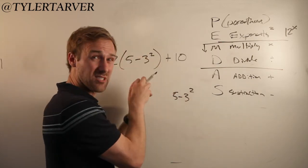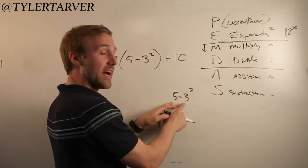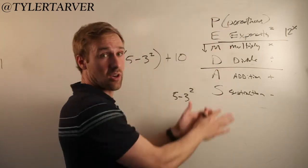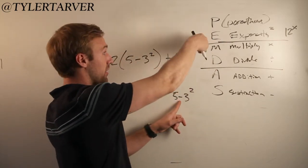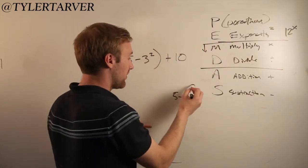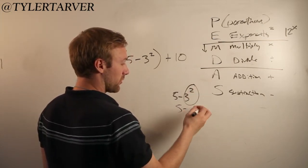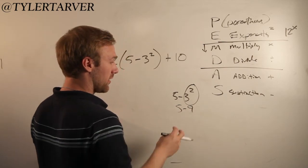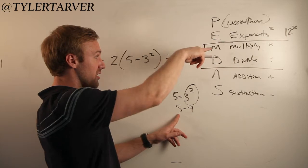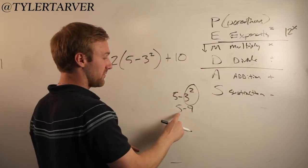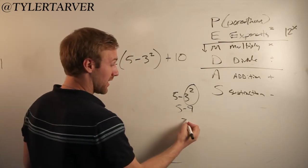I need to solve it as much as I can, then move on. Inside the parentheses, we essentially do this all again. Are there any more parentheses in here? No. Do we have any exponents? Yes — we've got this, so we need to do that. So 5 minus 3 squared, 3 squared would be 9. Now we move down — multiply, no multiplication, no division, no addition. There is subtraction: 5 minus 9 is negative 4.